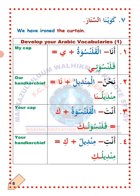Ithnan, number two — Nahnu, we. So how do we change the word al-mindil, the handkerchief, to suit Nahnu so as to indicate ownership? All you need to do is to drop aleph and lam — step one. Step two: you attach na' to the last letter. Al-mindil will now become mindiluna, which means 'our handkerchief.'